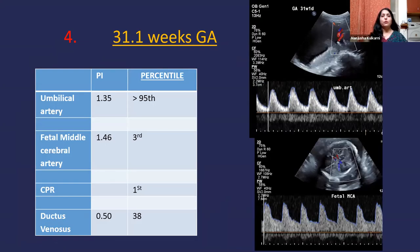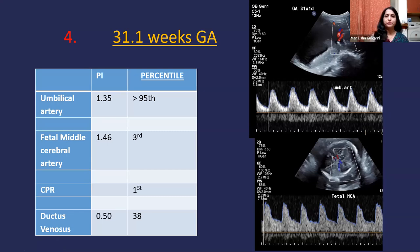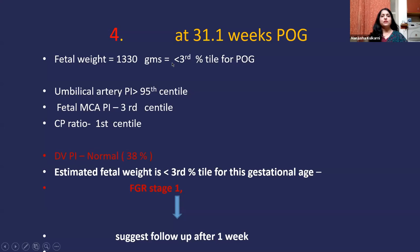On Doppler at 31.1 weeks, the umbilical artery percentile had gone above the 95th centile, the middle cerebral artery was below the 3rd centile, and CPR was at the 1st centile. However, ductus venosus PI was again normal at the 38th percentile. Since the ductus venosus PI was within normal limits, she was again classified as fetal growth restriction Stage 1 and advised follow-up after one week.